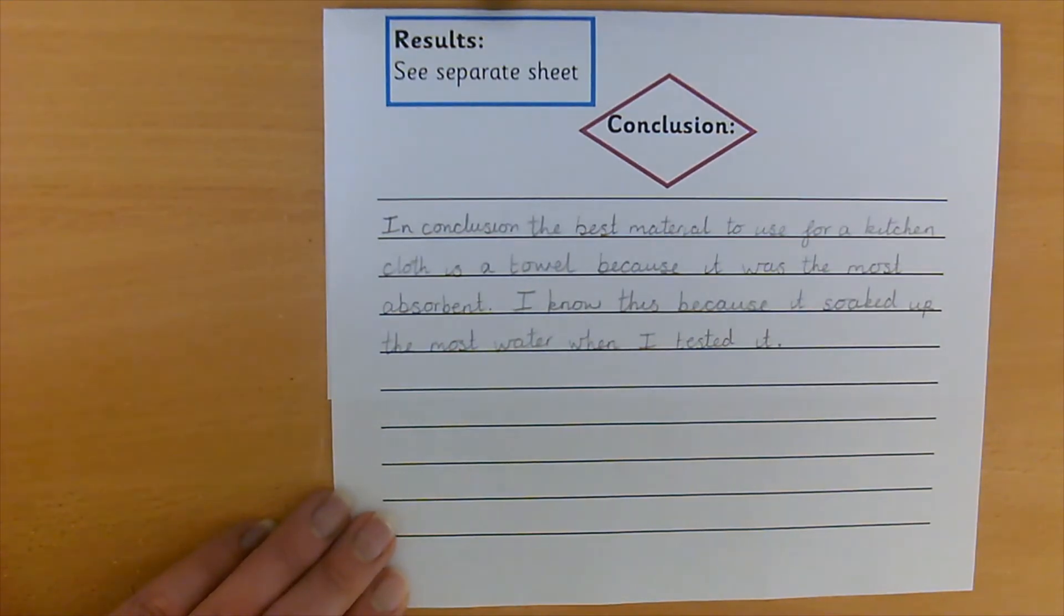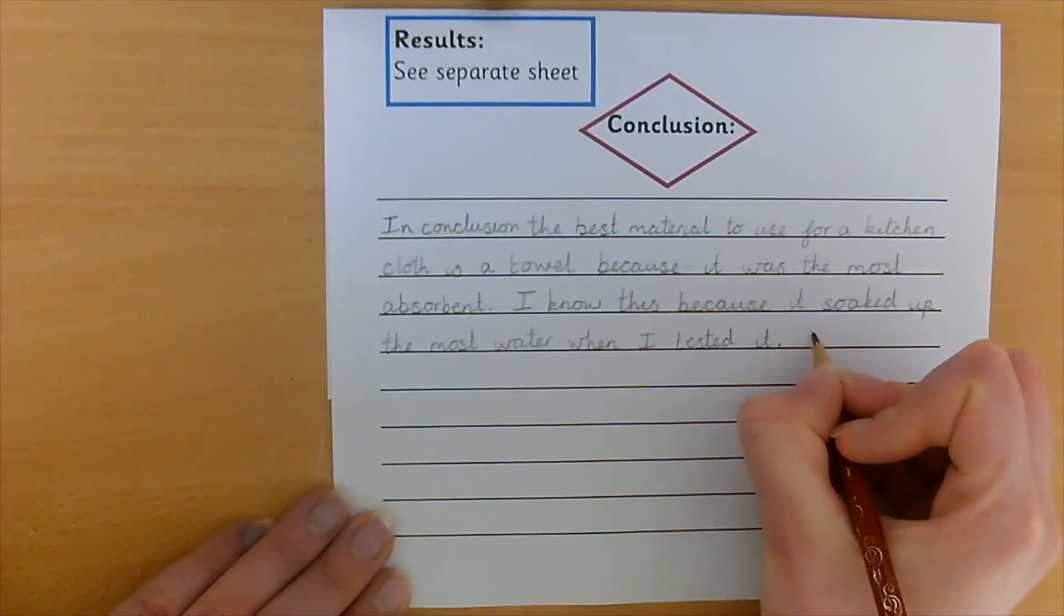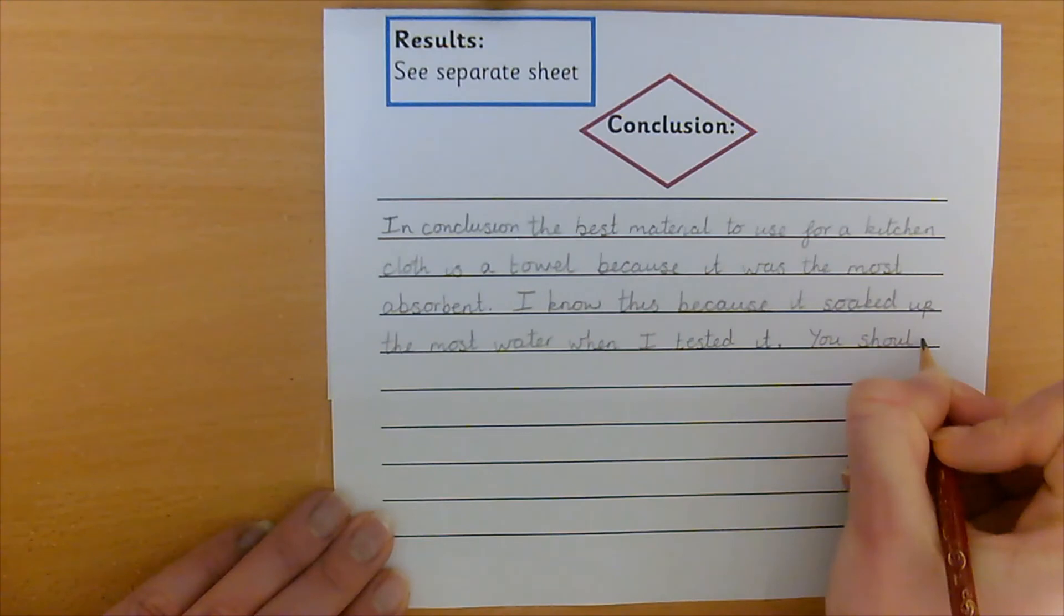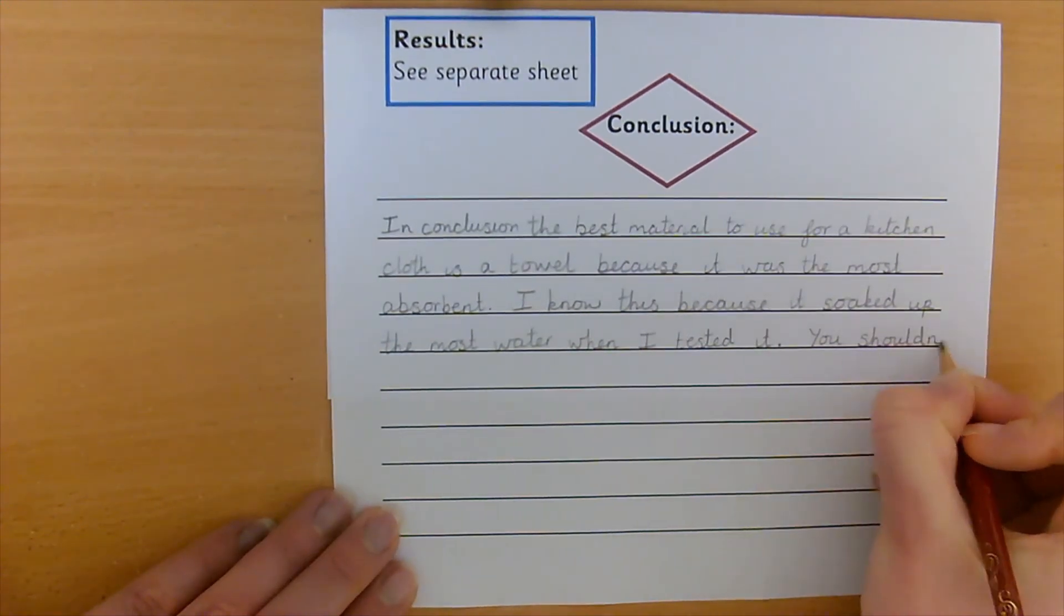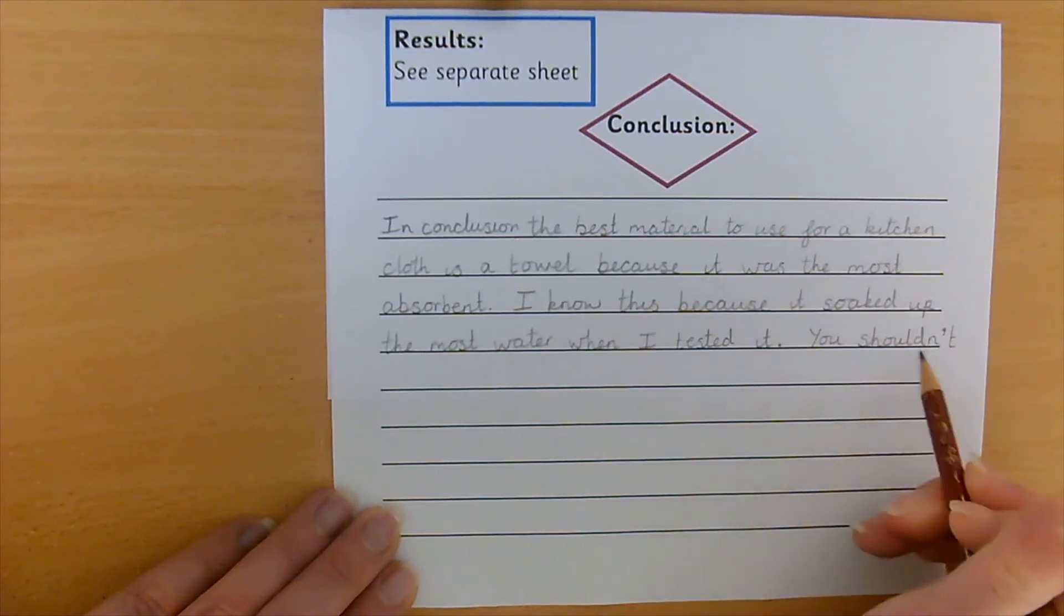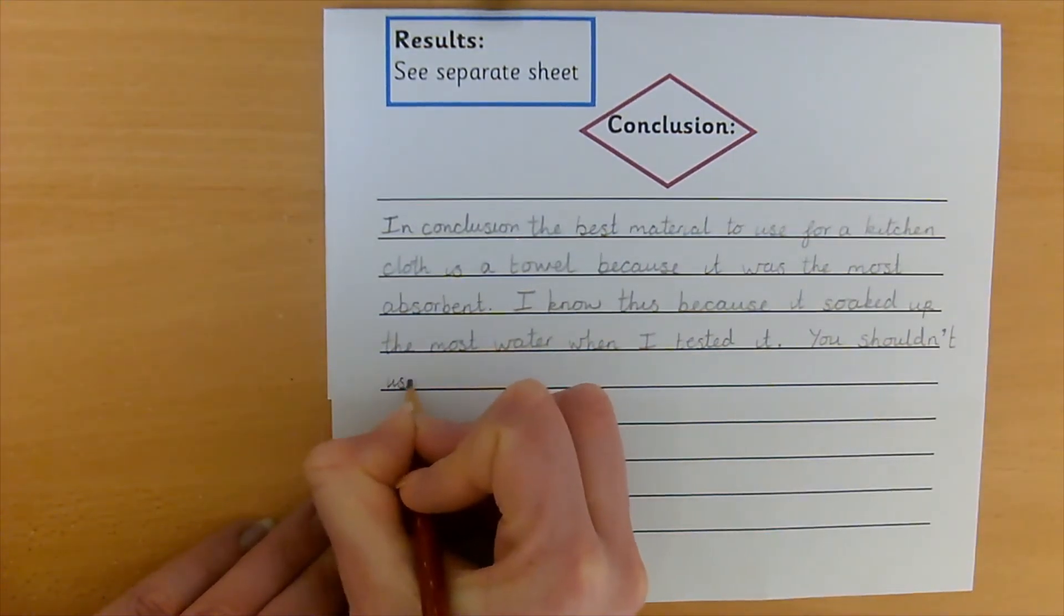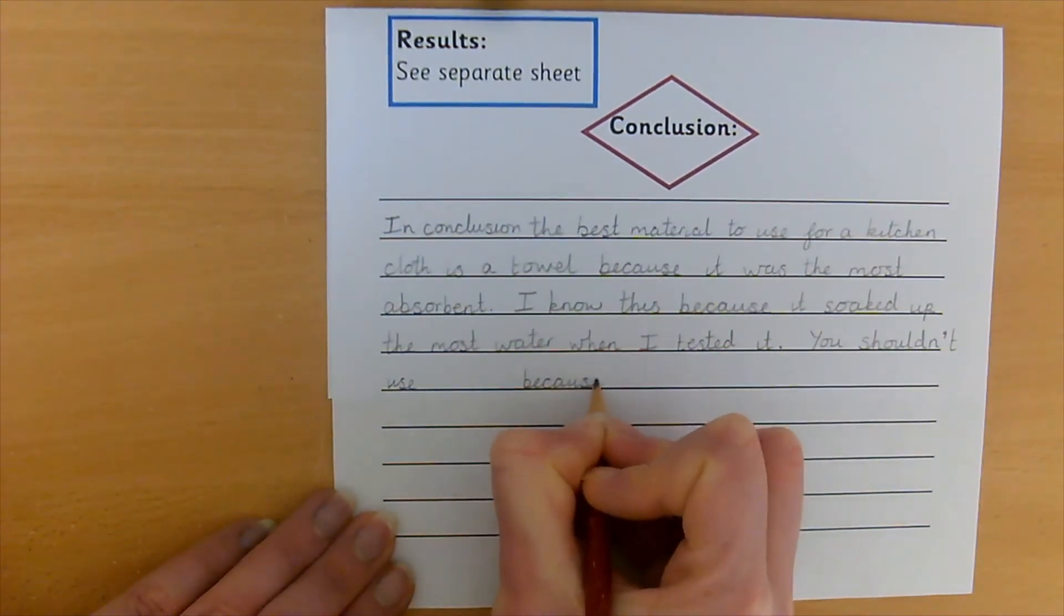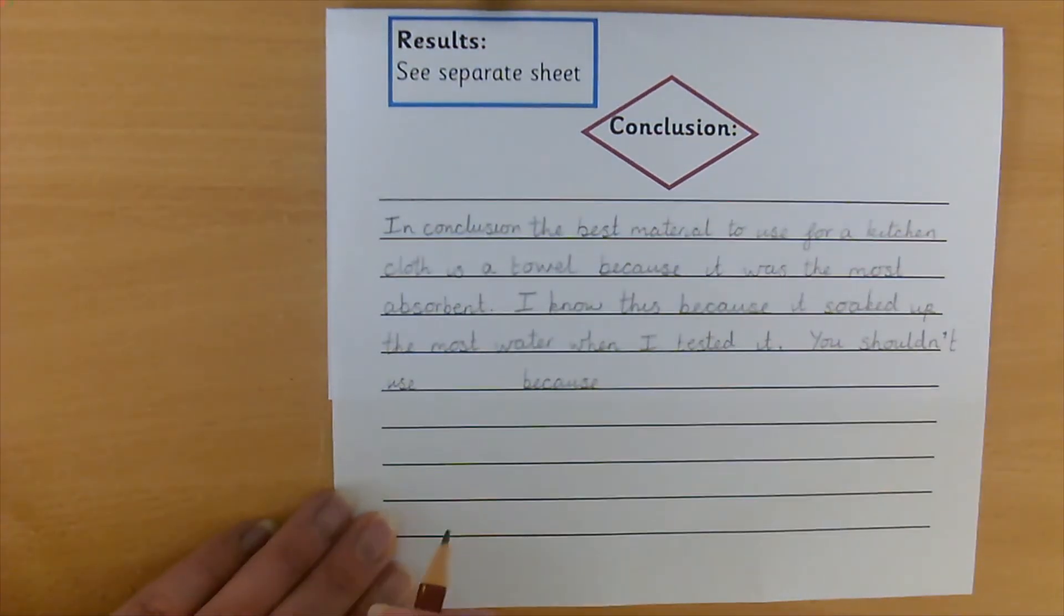Now we can also write a sentence in our conclusion about the materials that we shouldn't use. So choose a material from your list that wasn't very good at absorbing or soaking up water and write a sentence about that. And you can start with you shouldn't use. So should is a year two word. Should, three letters, one sound, should, and it's short for should not. So we do our apostrophe, shouldn't use, and then write your material because, and why should you not use that material. So pause the video and do that now.